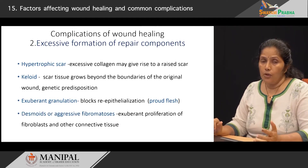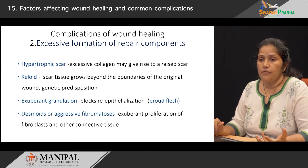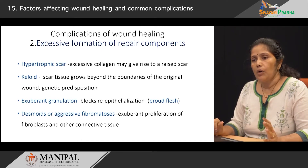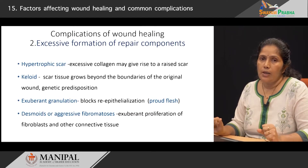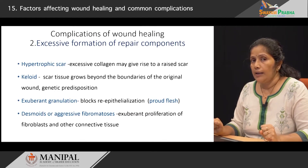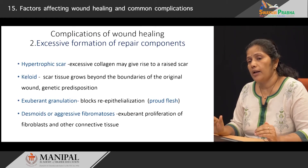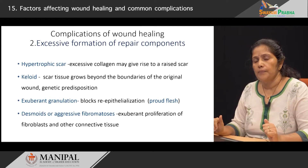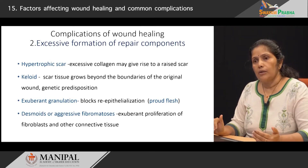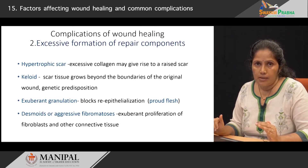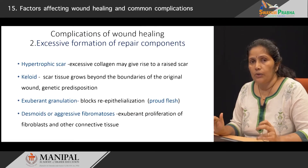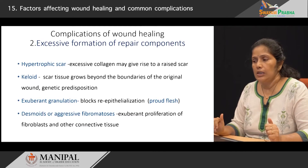The fourth type of excessive tissue formation occurs as desmoid or aggressive fibromatosis, where there is excessive proliferation of fibroblasts. These lesions tend to recur even after removal, similar to a keloid — even if you remove a keloid, it will grow back.